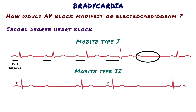In Mobitz type 2, the AV node does not conduct some proportion of incoming atrial impulses to the ventricles. This causes ventricular beats to be intermittently dropped entirely.